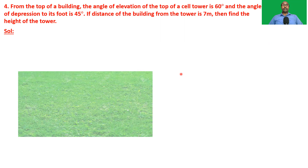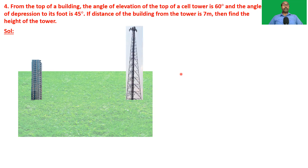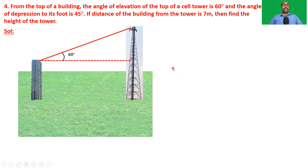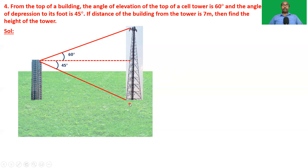Watch the problem carefully and imagine the scene. There is a ground with a building and a cell tower. The angle of elevation of the top of the cell tower from the top of the building is 60 degrees — this dotted line is the horizontal line — and the angle of depression of the foot of the cell tower is 45 degrees. The distance between the feet of both the building and tower is 7 meters.